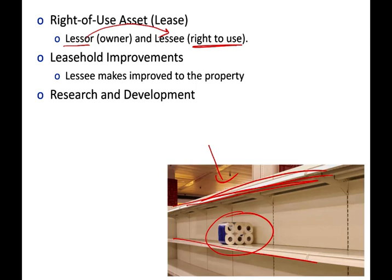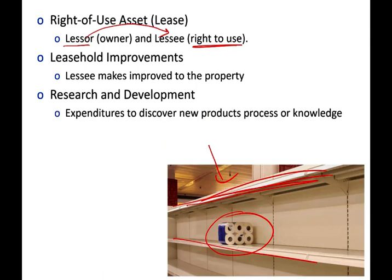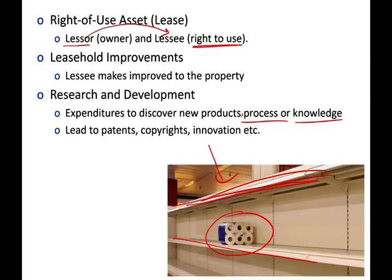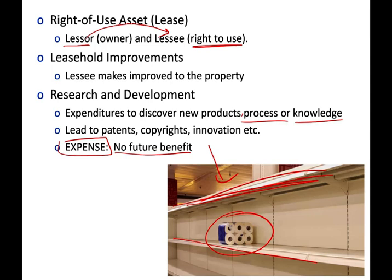When talking about intangibles, we need to discuss research and development — but R&D is not itself an intangible. Research and development involves expenditures to discover new products, new processes, or new knowledge. R&D could lead to patents, copyrights, and innovation, but it is not by itself an intangible asset. Under GAAP, research and development costs are expensed because there is no certain future benefit — you may spend millions or billions of dollars and end up with nothing useful.